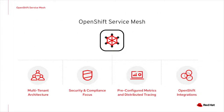OpenShift Service Mesh based on Istio provides you with all the great features and functionality that you know and love, though we also provide a number of enhancements on top, including a multi-tenant architecture, security and compliance enhancements, and an out-of-the-box metrics and tracing stack. These enhancements, combined with a tight integration with the overall OpenShift hybrid cloud platform, provide a great experience for administrators, IT operations, and development teams alike, helping make them more efficient and productive in their day-to-day tasks.